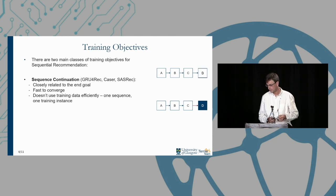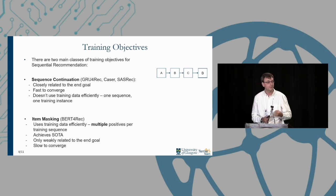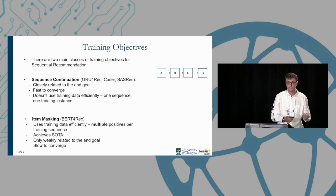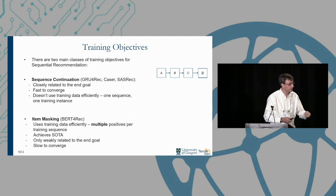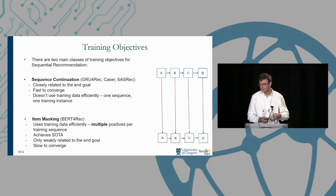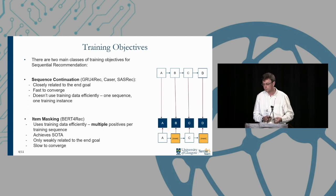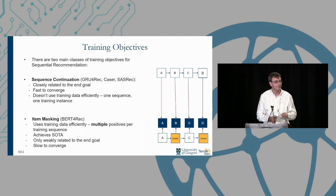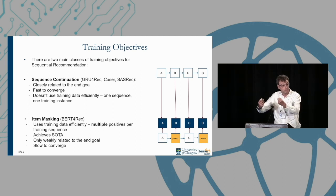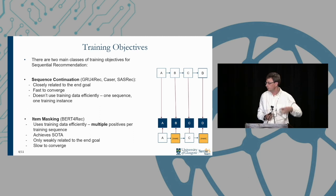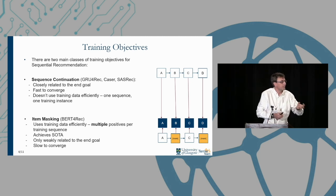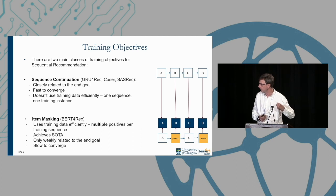On the other hand, item masking — used in BERT4Rec and inspired by BERT in NLP — takes the training sequence A B C D, masks out B and D, and tries to get the model to recover those masked items. This is a more efficient use of training data: for each sequence we give the model multiple positives to recover. It gives good effectiveness, as BERT4Rec showed, but it is slow to converge and only weakly related to the end goal — hiding B from the model isn't actually a useful training signal.